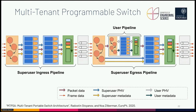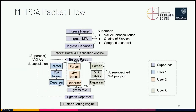MTPSA extends PSA with support for multi-tenancy. It consists of a super user pipeline that can process packets before and after user programs. The super user pipeline is responsible for associating incoming packets with user programs and applying a set of permissions for each user. The user pipelines are implemented in parallel to one another, each user program runs in a separate context, and user programs can be loaded at runtime. The super user ingress pipeline can apply packet encapsulation, quality of service, congestion control, or similar operations — for example, appending the user ID in a VXLAN header. It can also extract headers before passing the packet to the user pipeline, append additional information, or even drop the packet after the user pipeline.